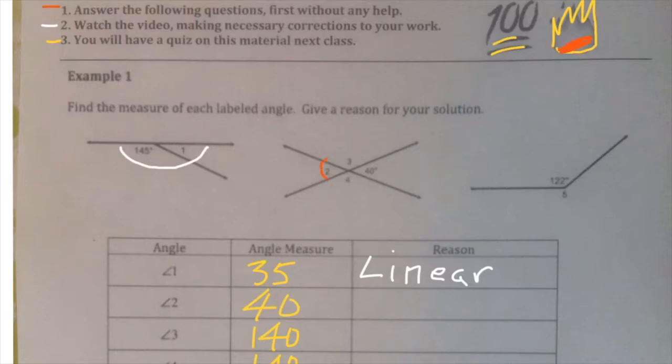For number two, you must notice that these two angles are vertical angles. So that is the word that I'm looking for there as far as a reason: vertical angles. Now angle three is worth 140 degrees because these two angles here also form a straight line direction, so again I'm looking for linear.